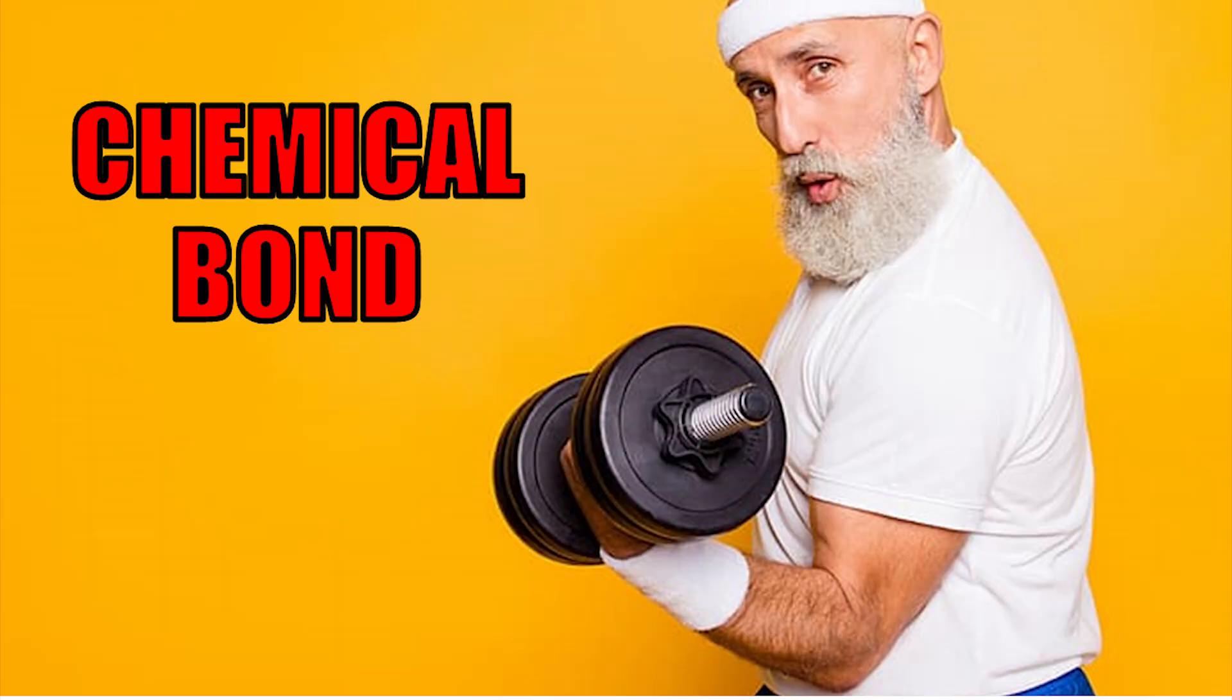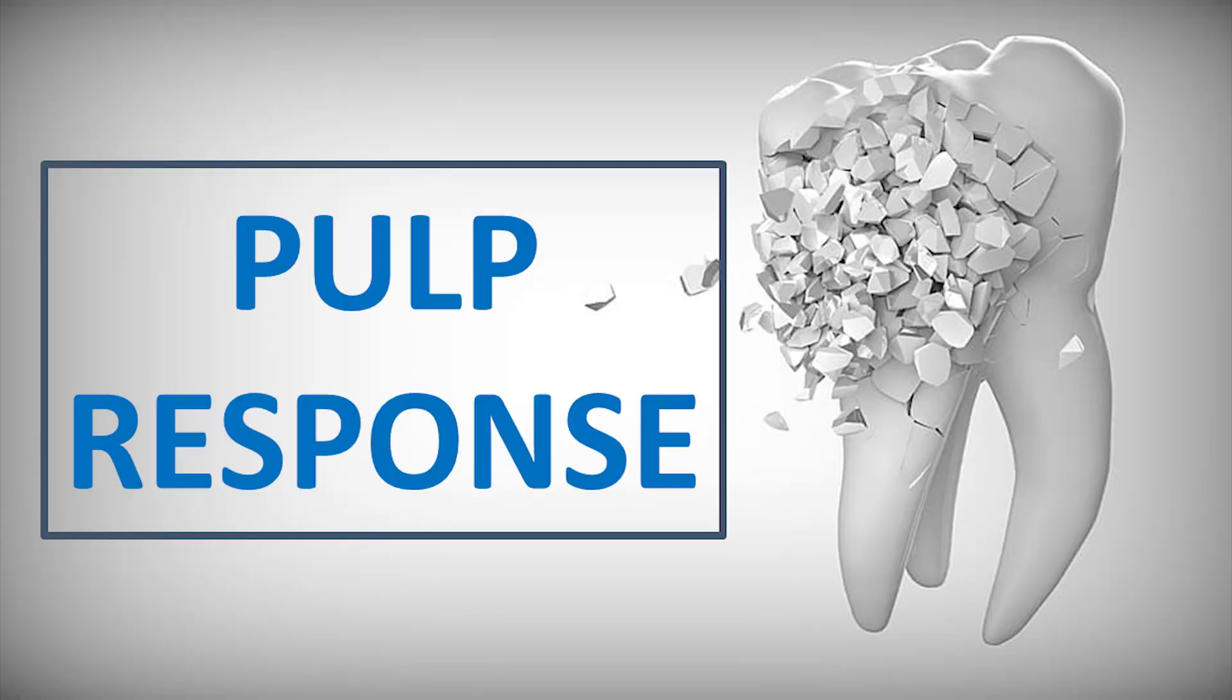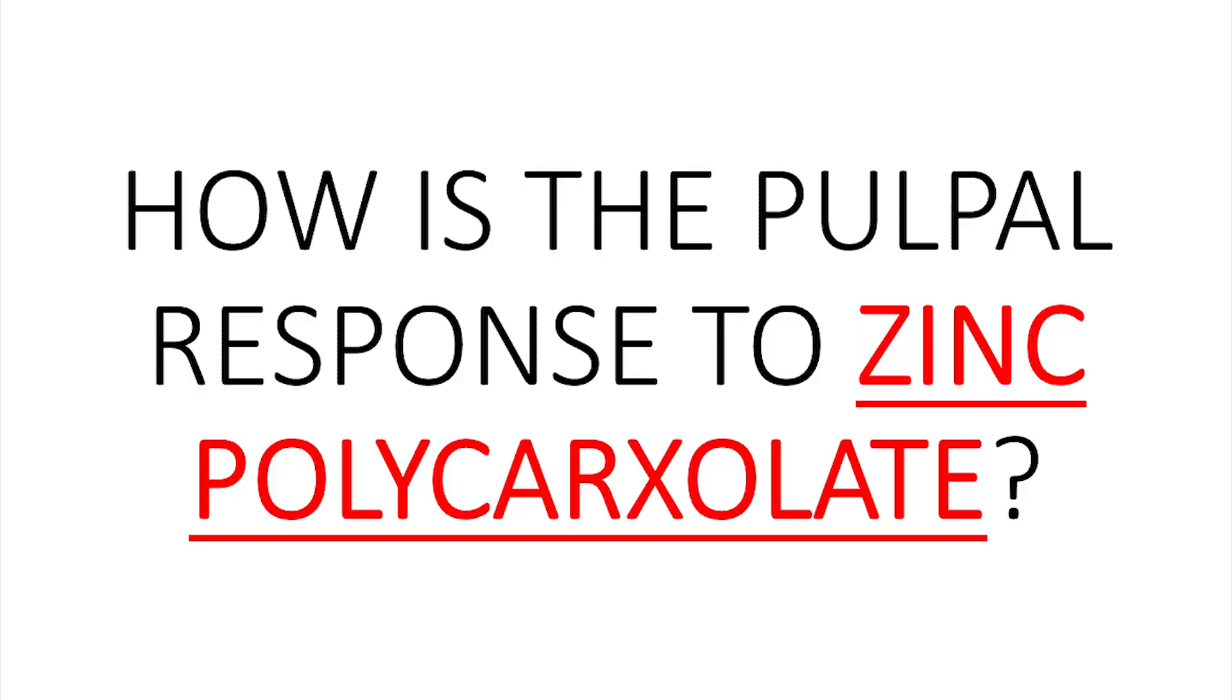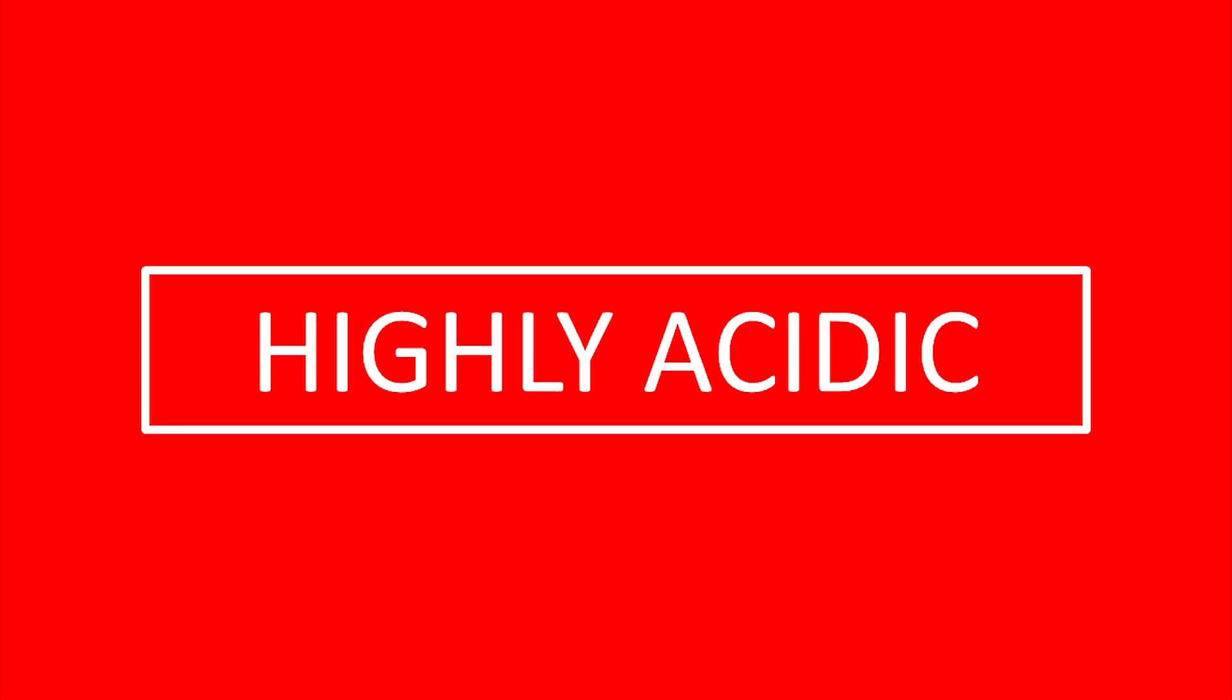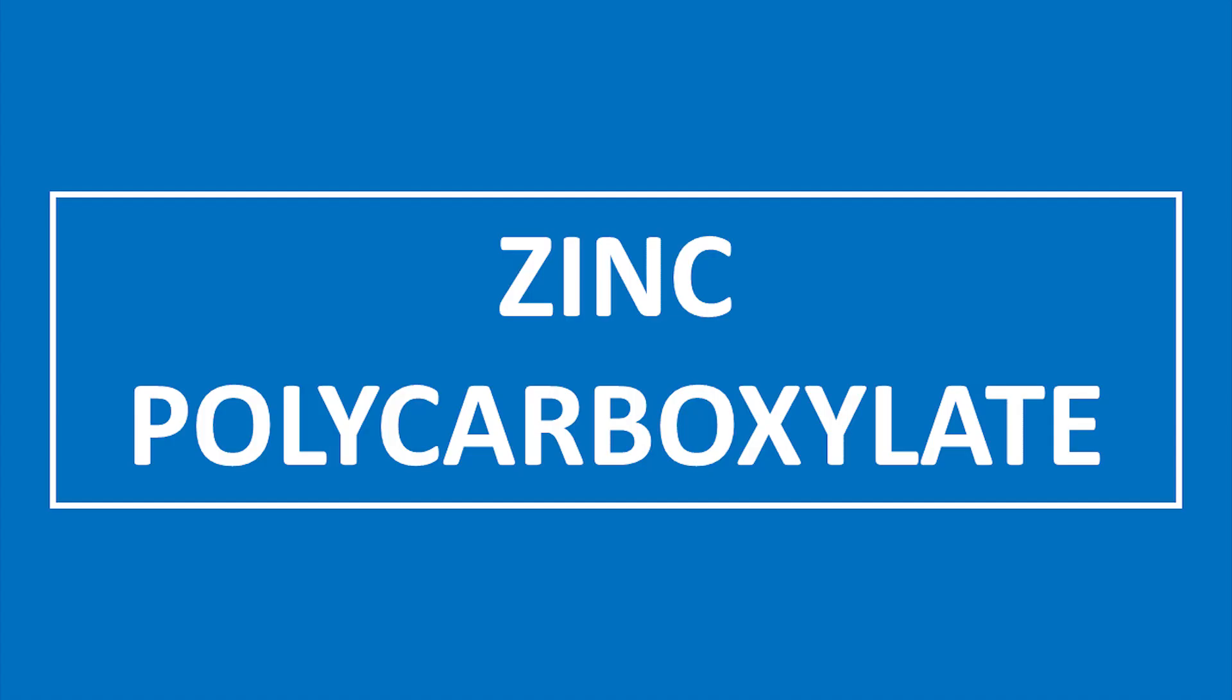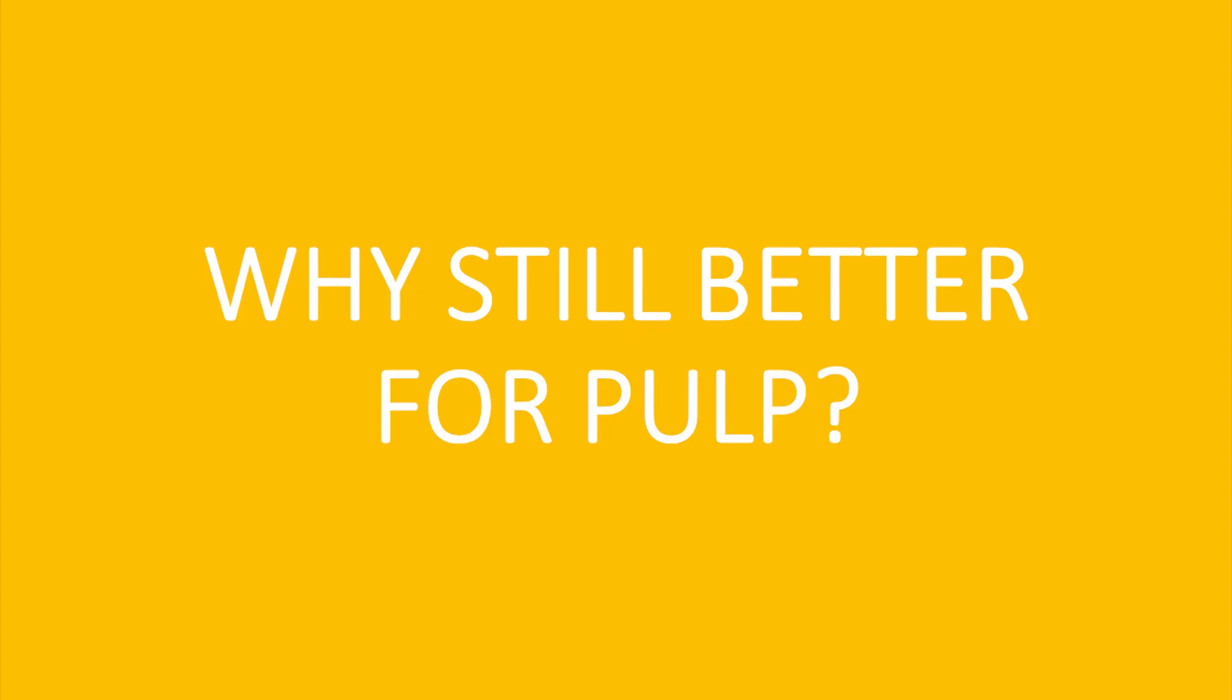Now let's talk about the last major property of zinc polycarboxylate cement. The major reason for replacing phosphoric acid with polyacrylic acid was to improve the pulp response to the cement. As we have learned in our last video, zinc phosphate is highly acidic since its initial pH is 2.14. However, in zinc polycarboxylate the initial pH is 3.42, but that pH difference is not great. Then the question arises: why is zinc polycarboxylate better for pulp when compared to zinc phosphate? There are two reasons.